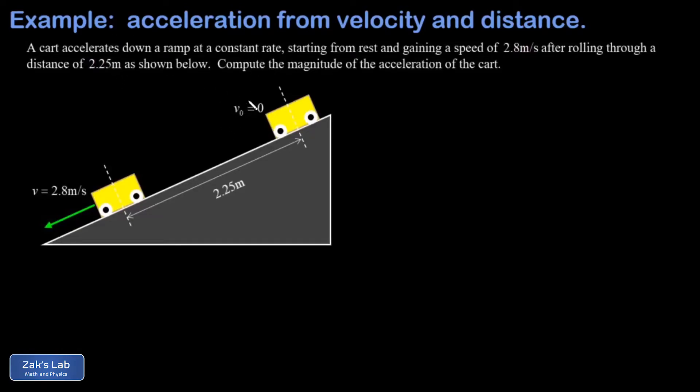In this video we're told that a cart is accelerating down a ramp at a constant rate. That's important because if the acceleration is constant, then we're allowed to use the one-dimensional kinematics equations. It starts from rest, so the initial velocity is zero.